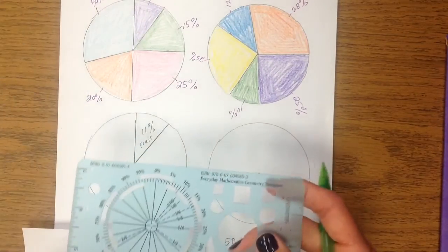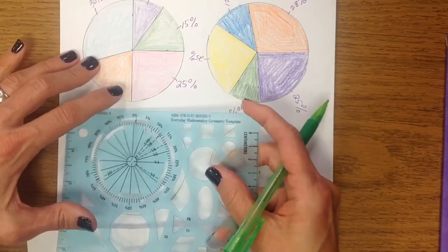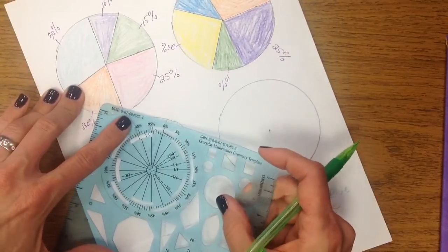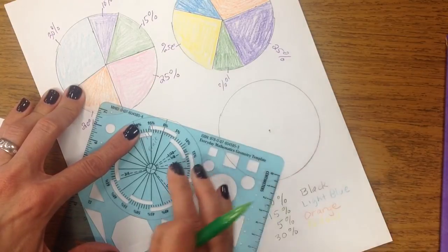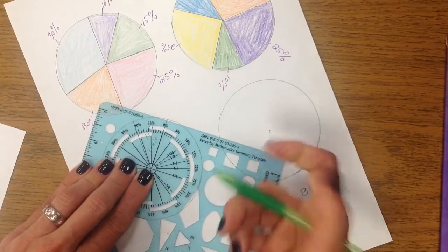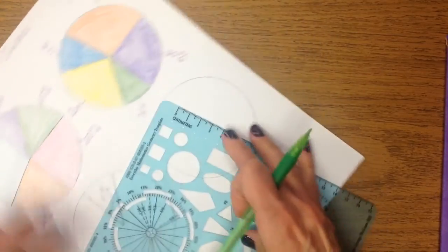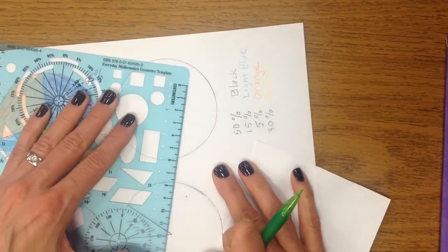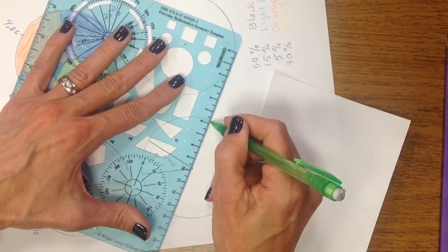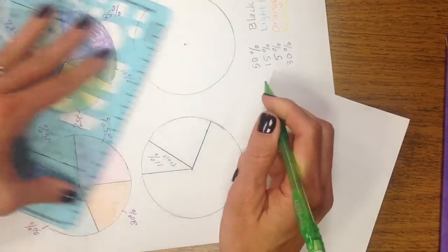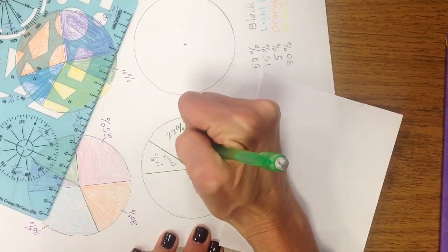So, again, remember, just when we were using this last night, you've got to make sure that you don't go back and line the zero up in the same place you started. We're going to start now, moving forward from where we left off. So, we're going to line up the zero with the second line that we created. And now, we're going to find 22%. And then, we're going to go ahead and do the same thing. All right, and so, that one is 22%. That was the cookies.